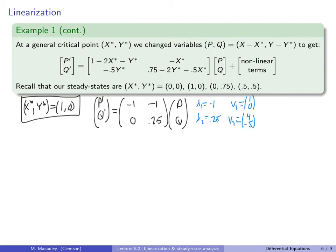Since lambda-1 is negative and lambda-2 is positive, we have a saddle point at (1,0). Solutions go inward along v1 = (1,0) and outward along v2 = (4,-5). The phase portrait near this point shows solution curves bending away in the unstable direction.